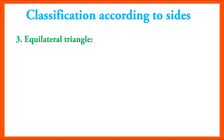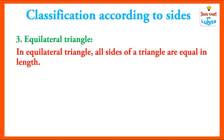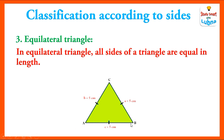The third type of triangle is equilateral triangle. In an equilateral triangle, all sides of a triangle are equal in length. Here the three angles are A, B and C, and the length of all three sides AB, BC, and CA or AC are 5 cm each, meaning all three sides are equal. This is also represented by small tick marks on the sides. So this type of triangle is called equilateral triangle.